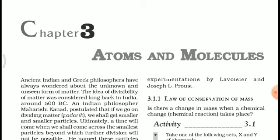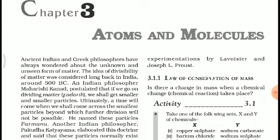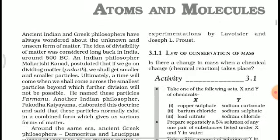Ancient Indian and Greek philosophers have always wondered about the unknown and unseen form of matter. The idea of divisibility of matter was considered long back in India around 500 BC. An Indian philosopher, Maharshi Kanaad, postulated that if we go on dividing matter, we will find smaller and smaller particles, and then there will be a stage when we will not be able to divide the smallest particles further.